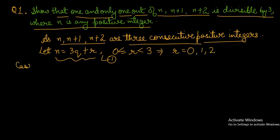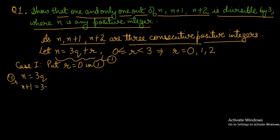Case number 1: we put r equal to 0. So n is equal to 3q. If we find out n plus 1, then it will be 3q plus 1. And if we find out n plus 2, then it will be 3q plus 2. So in case number 1, n is equal to 3 into q, which means n is divisible by 3.